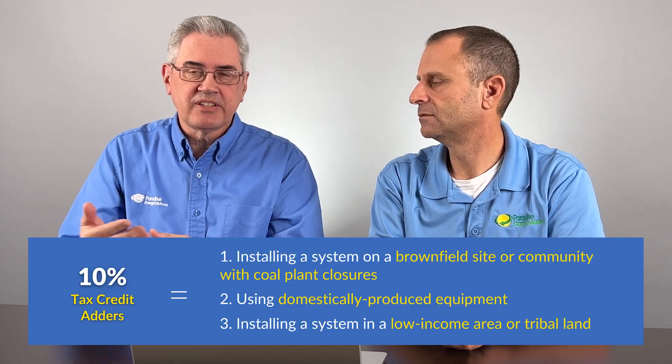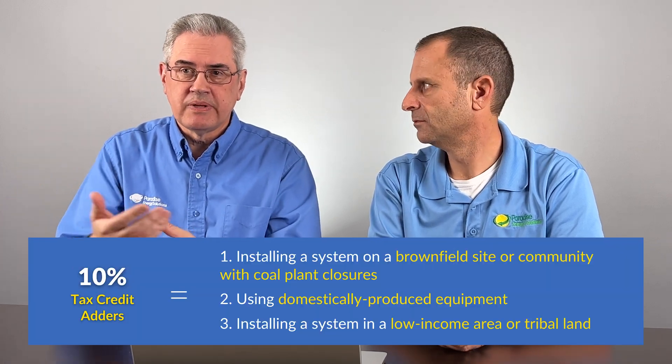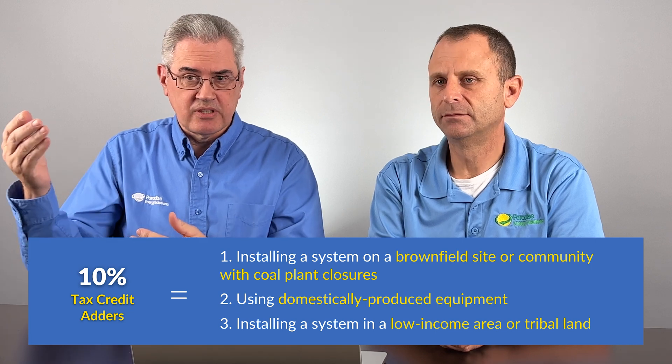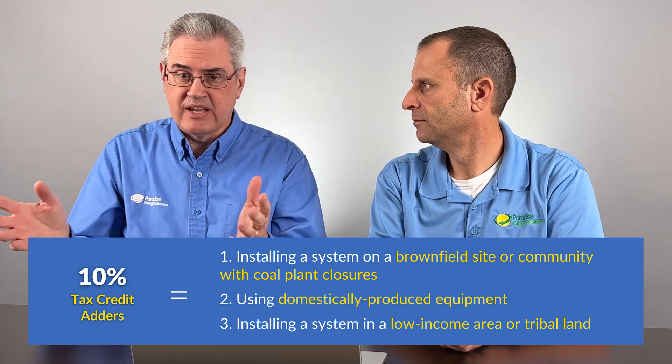And the ITC is going to have the adders. So, if it goes higher than 30, if you qualify for, say, the domestic content adder or the low income community adder or the energy community adder, any of those adders, completely knocks the PTC completely out of consideration.